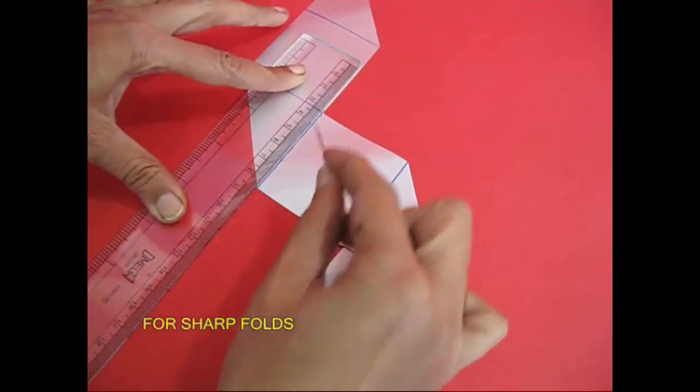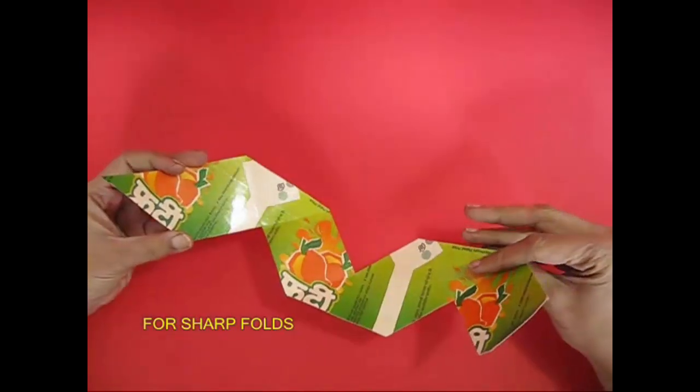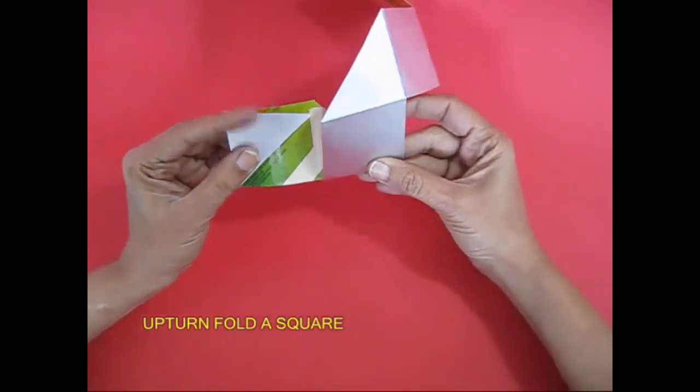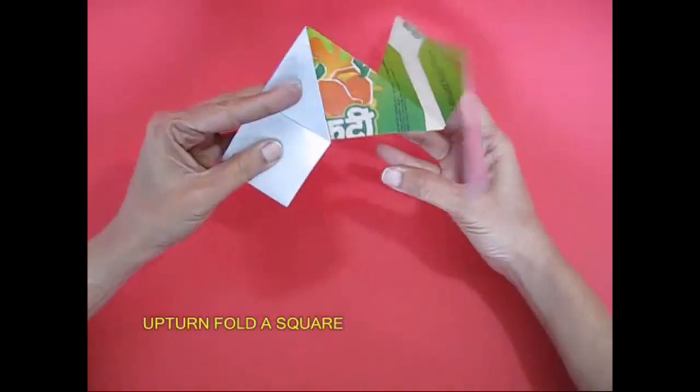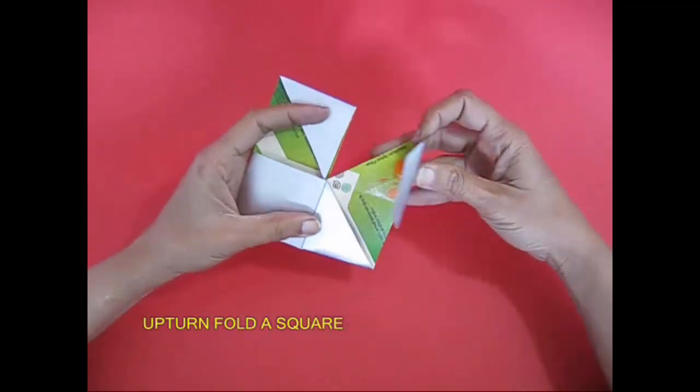This is the shape. Fold it. Fold it in a square shape. Then we have a square.